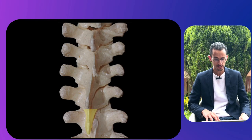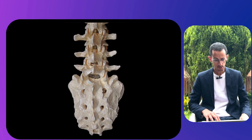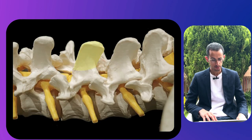The next image shows the facet joints, spinous process, and transverse process of the thoracic spine — note the difference in vertebral shape. Moving to the lumbar spine, the transverse processes become bigger, the facet joints become more vertically oriented, and again we can see the spinous processes, lamina at multiple levels, and the sacrum with the sacral foramina seen from posteriorly.